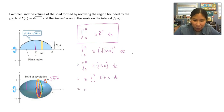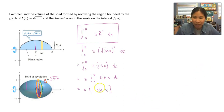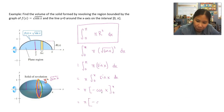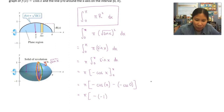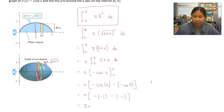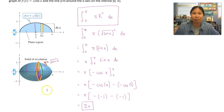Moving pi out front as a constant, the antiderivative of sine x is negative cosine x. So we evaluate pi times negative cosine x from zero to pi: pi times [negative cosine of pi minus negative cosine of zero]. Negative cosine of pi is negative of negative one, minus negative cosine of zero. This quantity equals two, giving us a total volume of 2π units cubed.